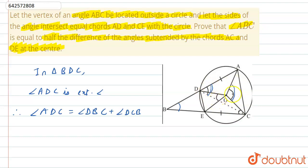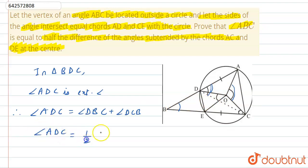This is also known as the inscribed angle theorem, which states that the angle subtended at the centre is twice the angle subtended at the circle. So angle ADC equals half of angle AOC. This is equation 1.